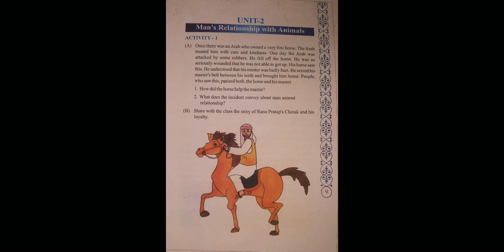So how did the horse help the master? The answer is: he seized his master's belt between his teeth and brought him home. What does this incident convey about man-animal relationship? This incident shows the relationship as a love relationship. If man will show loyalty towards animals, animals will also show equal loyalty towards man.